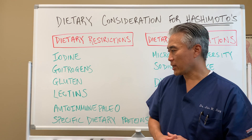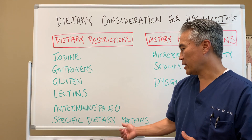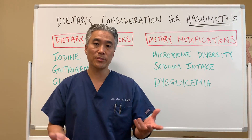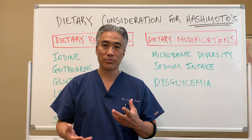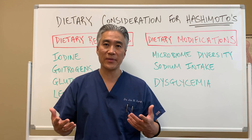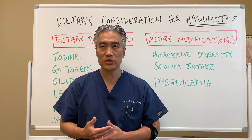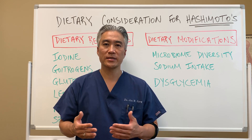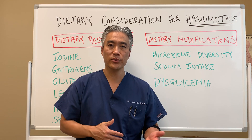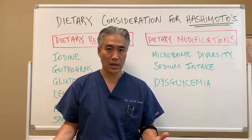A popular diet called the autoimmune paleo diet — is it good or bad? Specific dietary proteins, certain proteins that may look similar to gluten, can cause problems. So is that good or bad? Do we have to eliminate everything? Maybe, maybe not. It really depends on the individual. How do we address a patient who has Hashimoto's thyroiditis and has issues with certain foods, or limitations because they think everything is causing a problem for them?